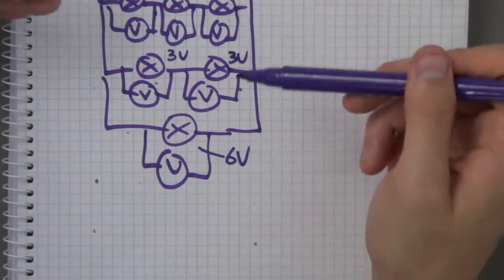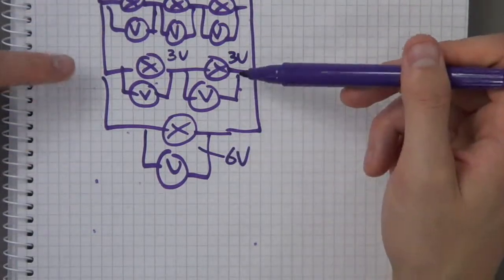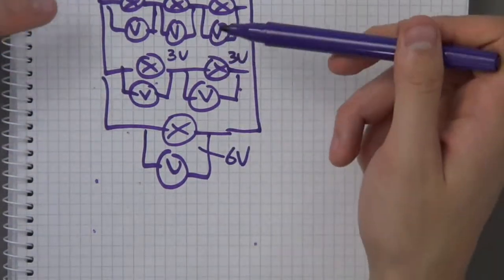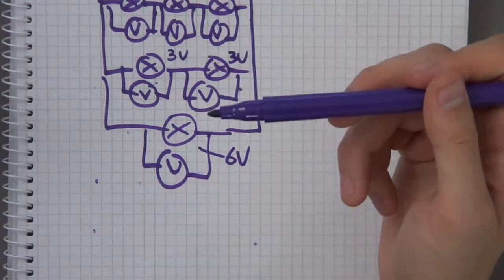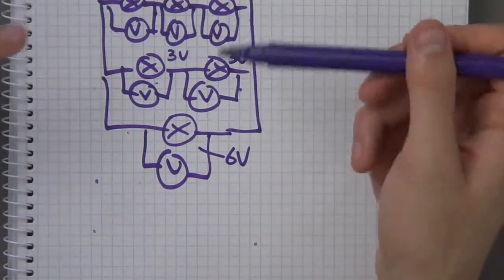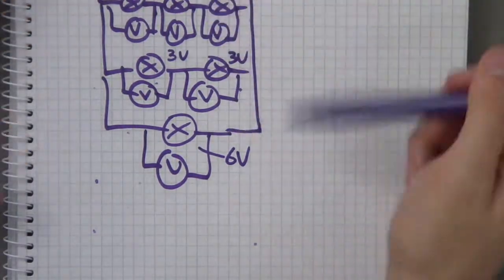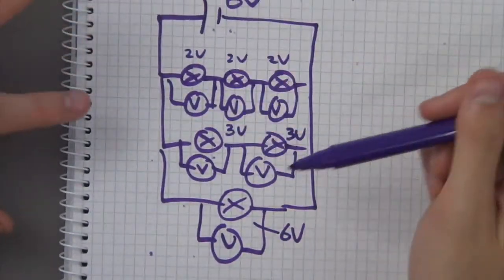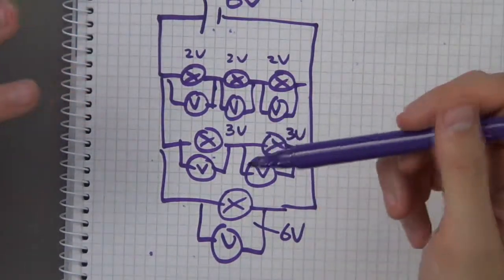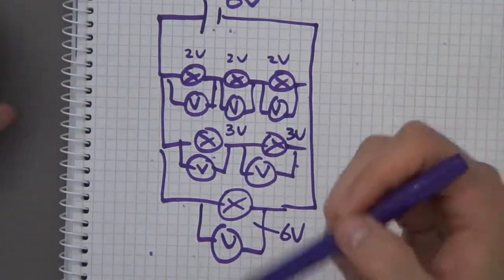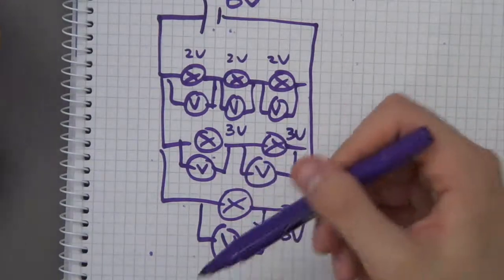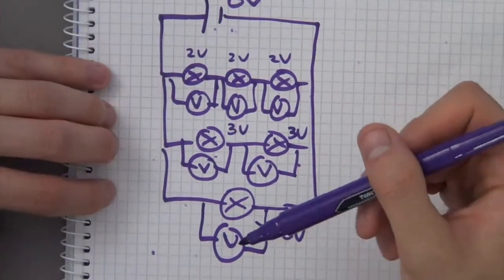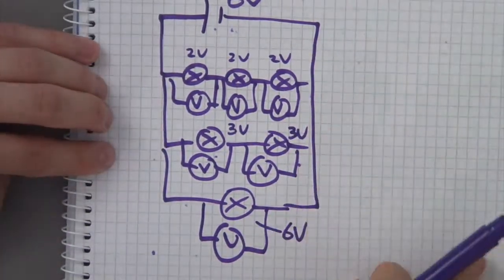This one example combines the voltage rule for both series and parallel circuits. If you understand this, you should have no problems understanding how voltage is split in series and parallel circuits, because it has everything in one circuit.